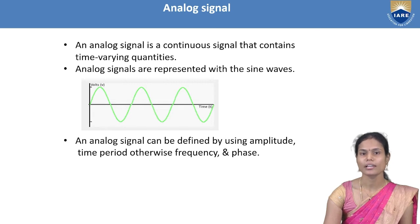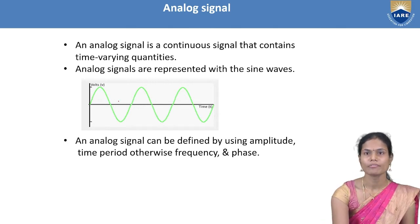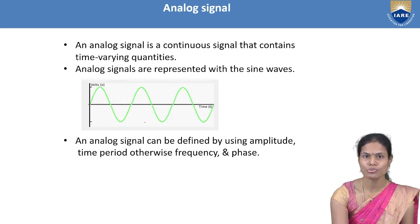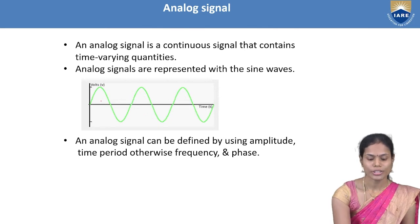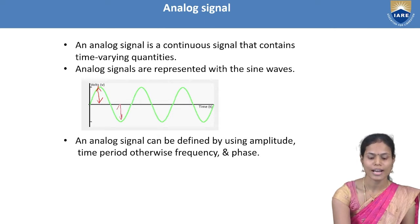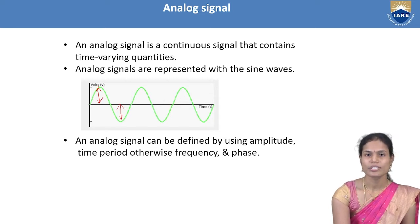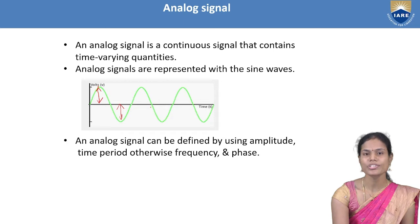To represent the analog signal, I am considering a sinusoidal signal with respect to time period T. This analog signal can be defined by its amplitude, phase, and frequency or time period. Amplitude indicates the height of the signal in both positive and negative direction, and frequency indicates the rate at which the signal is varying.